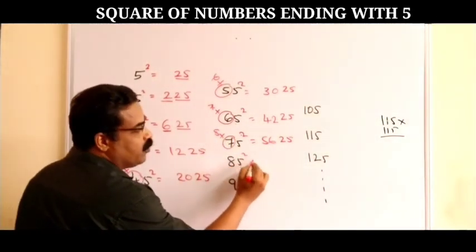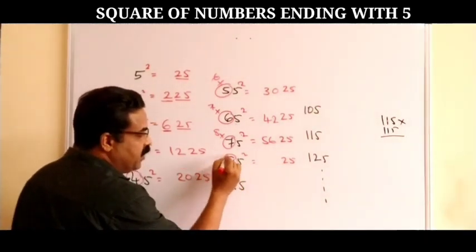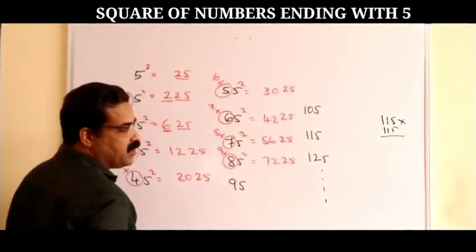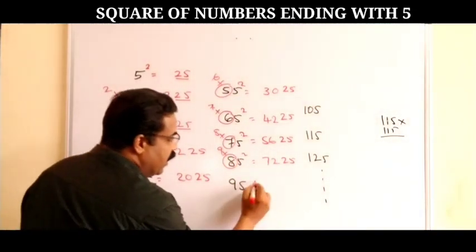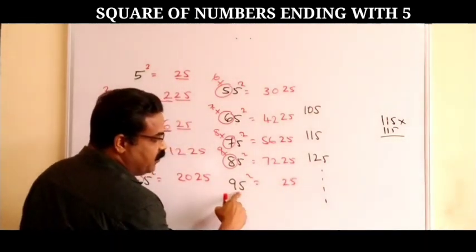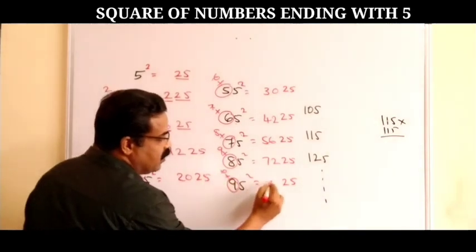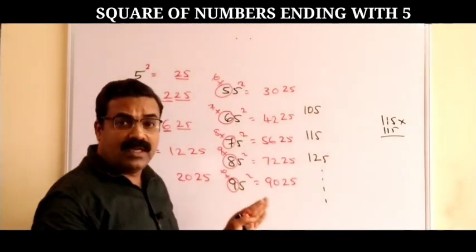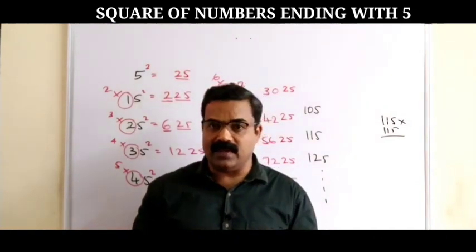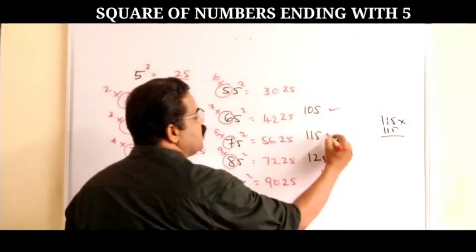For 85²: last two digits 25, and 8 × 9 = 72, so the answer is 7225. For 95²: last two digits 25, and 9 × 10 = 90, so the answer is 9025. You can find the square of any number if it ends with 5, no matter how large.